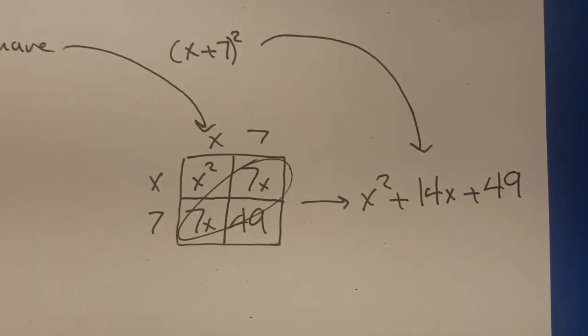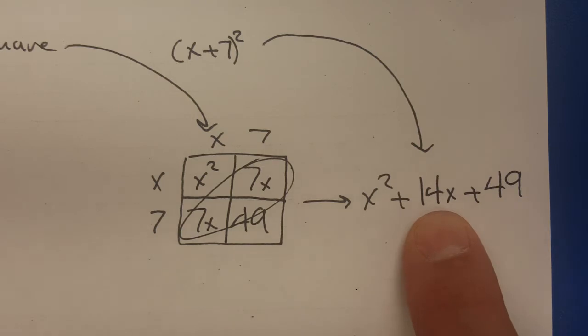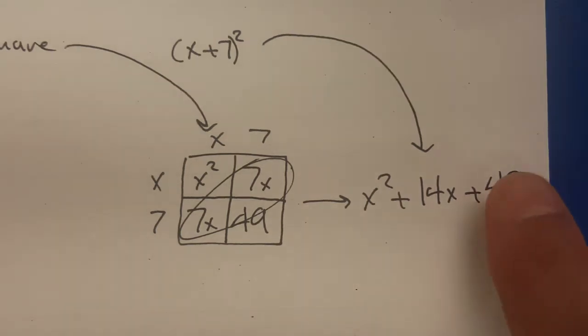That's basically the method. You want to look at the middle number, you want to chop it in half, and then you want to square it to get to this dude.